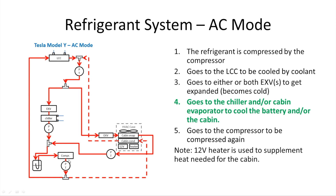This slide shows the air conditioning mode of the thermal management system. The refrigerant is compressed by the compressor, then goes to the liquid-cooled condenser to be cooled by coolant, then goes through either or both EXVs to get expanded — when expanded, it becomes very cold. It then goes to the chiller and/or cabin evaporator to cool the battery and the cabin, then merges, goes to the reservoir, and back to the compressor. Note: the 12-volt heater is used to add heat for the cabin if needed.